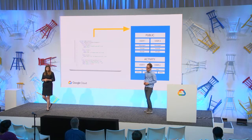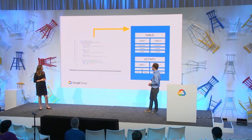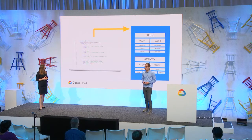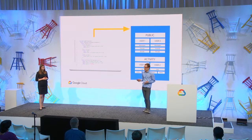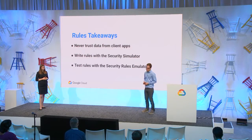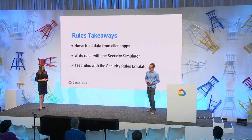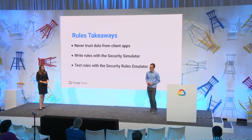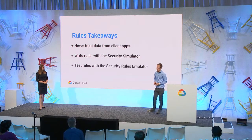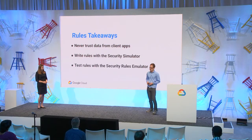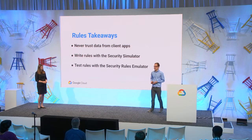The security rules we've shown you today describe a schema for your data and spell out invariants for your backend. They allow you to limit not only who can access your data, but also how the data relates to one another. Please remember to never trust data from your client apps — since you no longer have an application layer, security rules are the best way to enforce access controls. Use the security rules simulator in the Firebase web console to write and verify your rules, and use the new security rules emulator to create automatic tests.